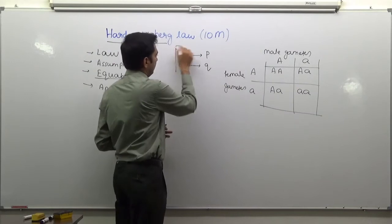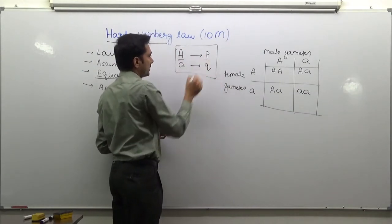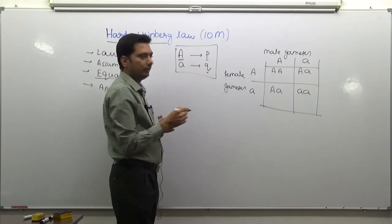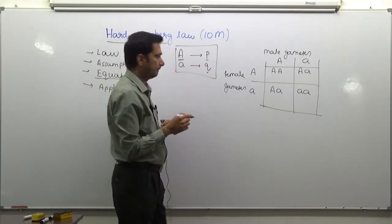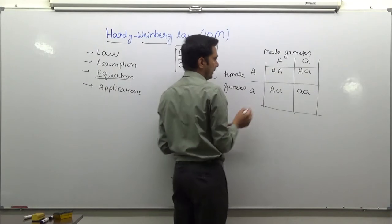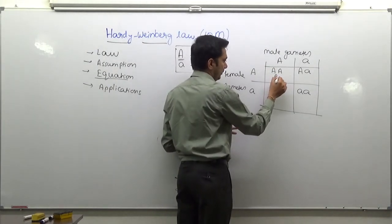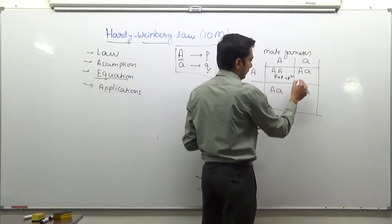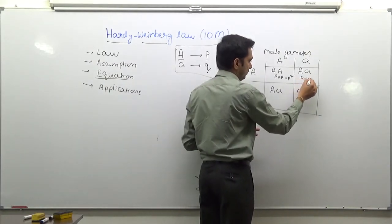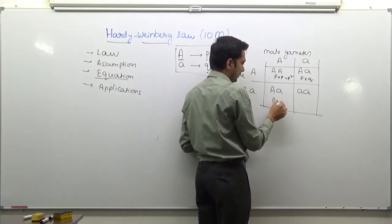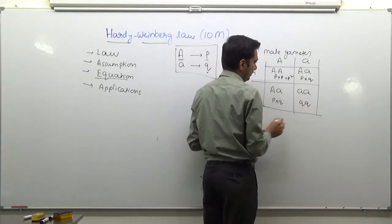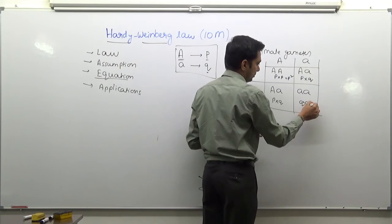As we define that P actually denotes the frequency of capital A and Q denotes the frequency of the small a in the population, we can write that frequency for this will be P into P that is P square, frequency for this will be P into Q and frequency for this will be P into Q, and the last one will have Q into Q that is Q square.